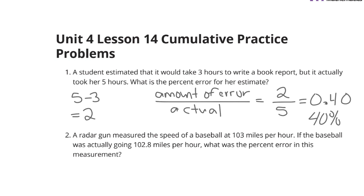Well, if we look for the difference here, 103 minus 102.8 is going to get us a difference of two tenths. The amount of error was two tenths divided by the actual amount, 102.8.